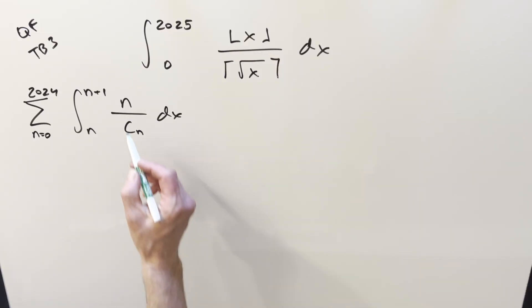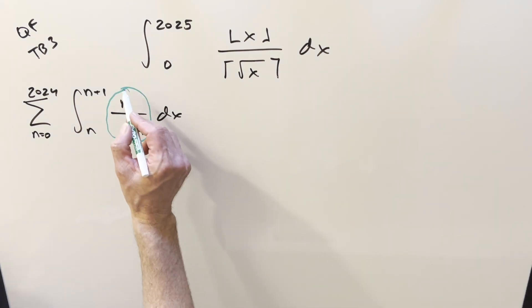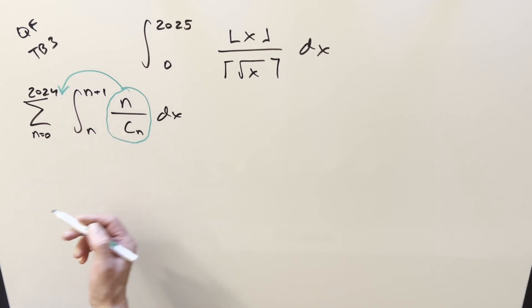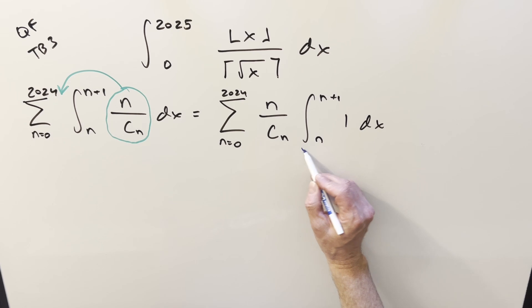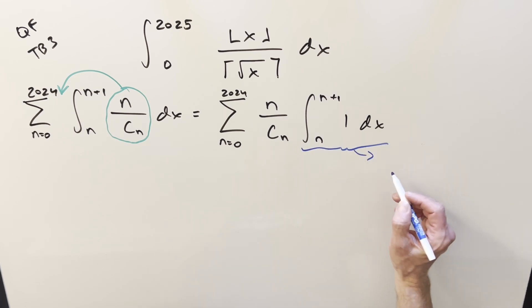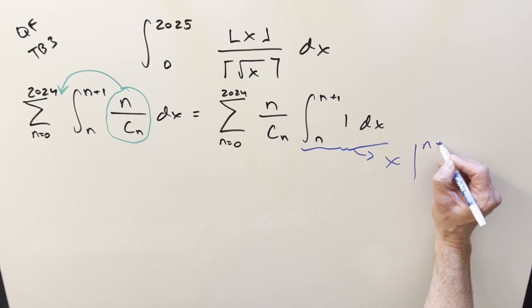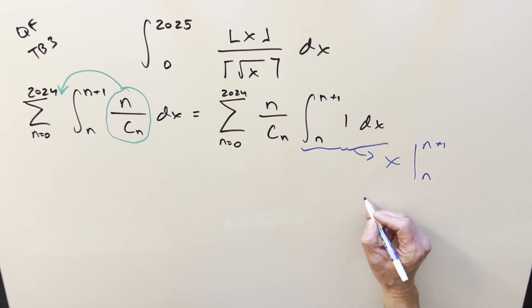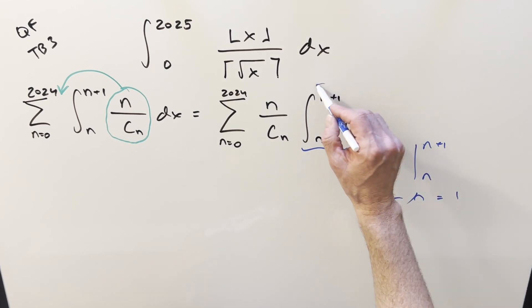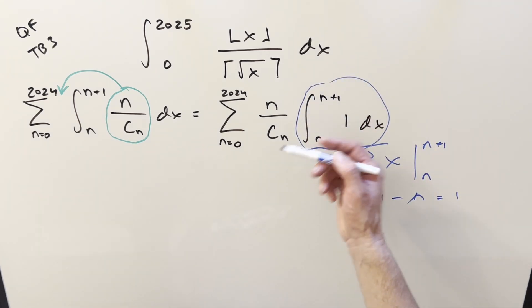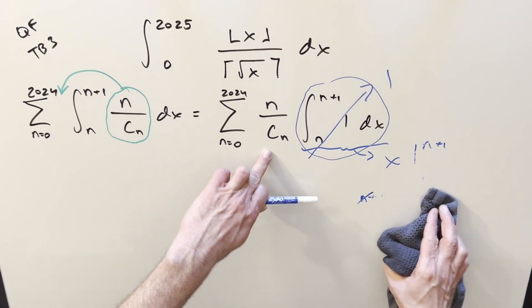Okay, now from here, what we notice is everything in here is just a constant with respect to the integral. We've got no x value anymore. So we can take everything and bring it out front of the integral and then just integrate one. When we integrate this, we just get an x from n to n plus one. When you evaluate that, you get n plus one minus n, but the n's cancel, and this is just one. So this whole piece here goes away. This is just multiplying by one. And so we can just deal with a series.